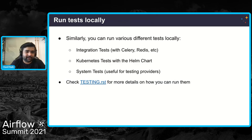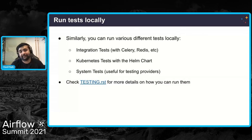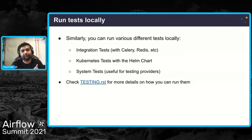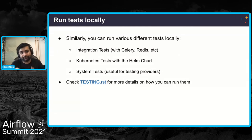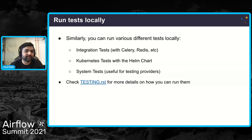You could also run integration tests, Kubernetes tests with the Helm chart, and system tests. With integration tests you can test components used in Airflow like Celery and Redis. With system tests, it's useful for testing different providers like Google providers and Amazon providers. You can use the example DAGs that are already inside the Airflow repo with actual external environments. More details are in the testing.rst if you want to know more.